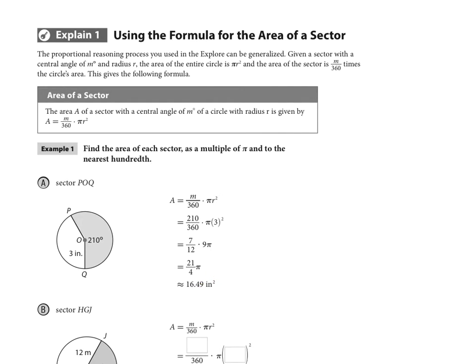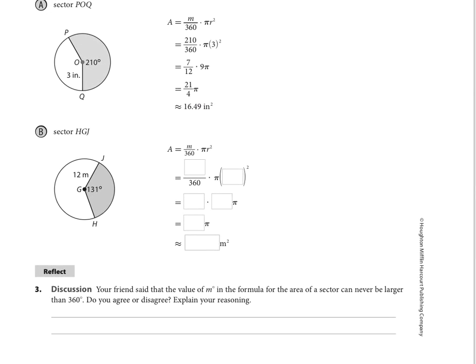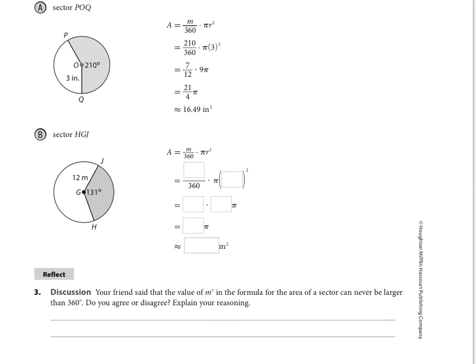Moving on to part B, if we are finding the area of sector HGJ, then that's going to be the measure of the central angle, which is 131 degrees, out of 360. And then the radius this time is 12 meters. So times π times 12 squared, which is 144 is 12π.